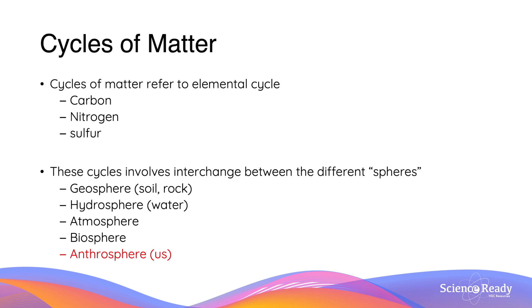The cycles of matter refer to elemental cycles including the carbon cycle, the nitrogen cycle, and the sulfur cycle. The monitoring of these cycles helps to remind us that the interchange of matter leads to the conservation of those types of matter.